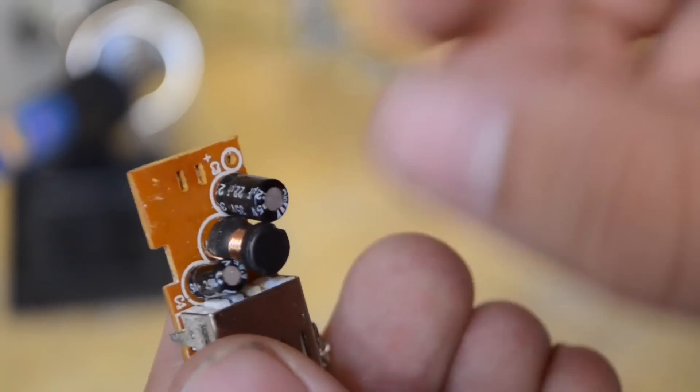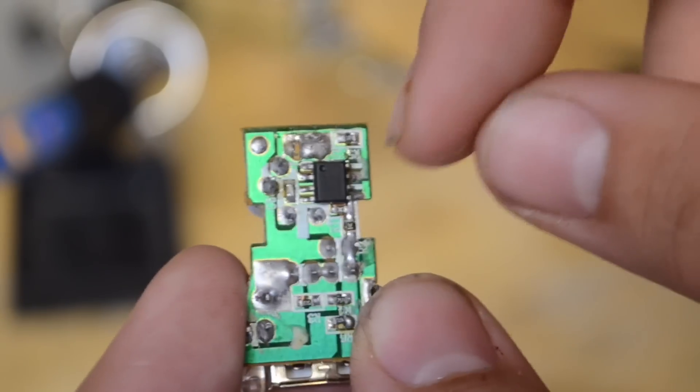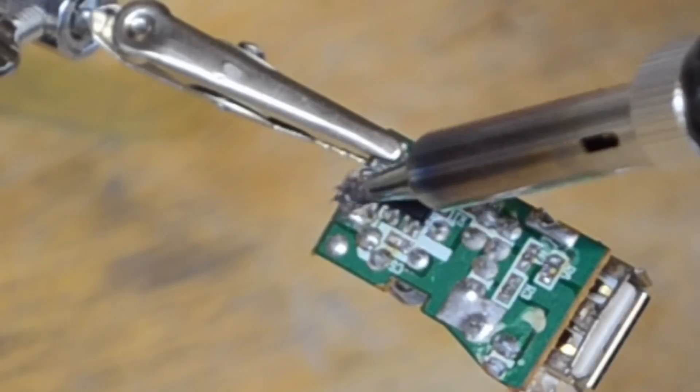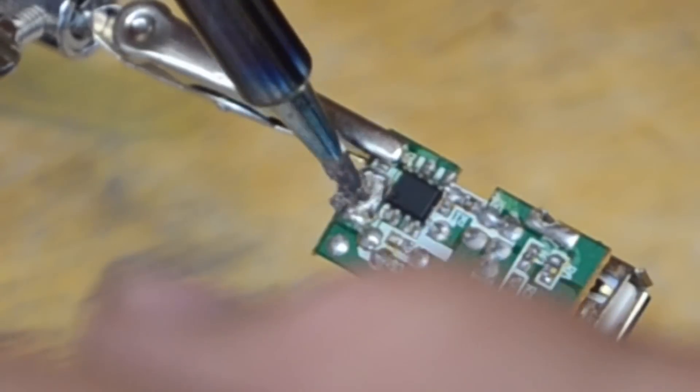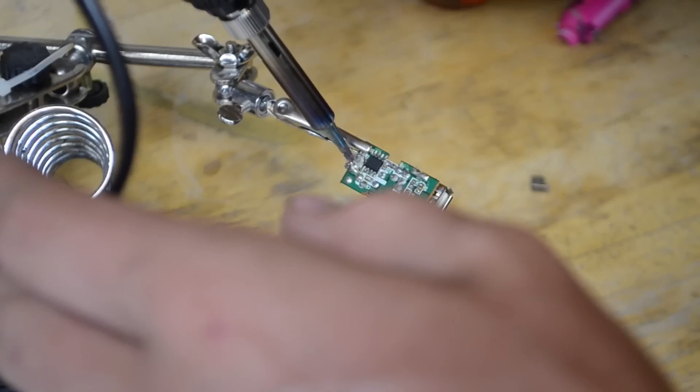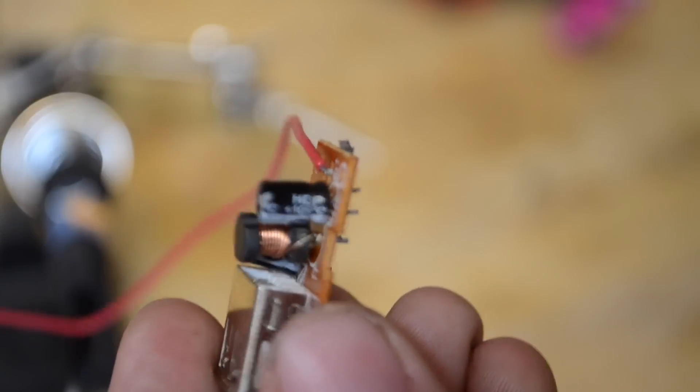So now that we have that tab soldered off right there, we're going to go ahead and carefully solder a red wire right to there. And there we go.